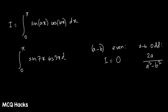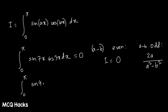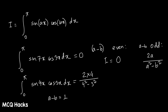Let's look at sin^7x cos^3x dx. See: a minus b result — 7 minus 3 equals 4. Is 4 an even number? So the answer will be 0. Another example: integration of 0 to pi of sin^4x times cos^3x. Here a minus b value is 4 minus 3 equals 1 — that means it's an odd number. So the answer will be 2a, where a value is 4: that is 2 times 4 divided by (4² minus 3²).